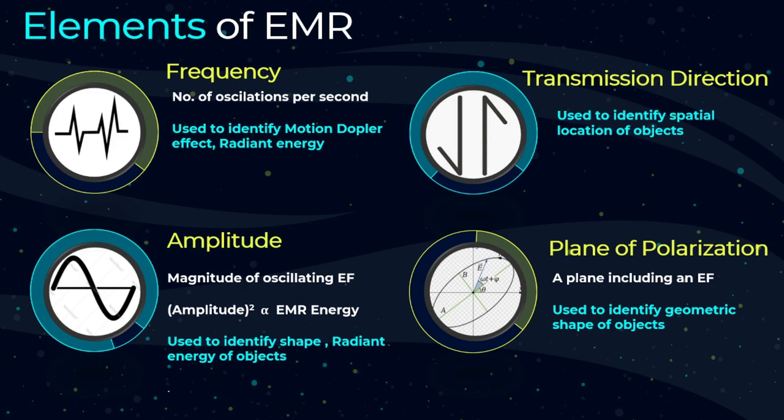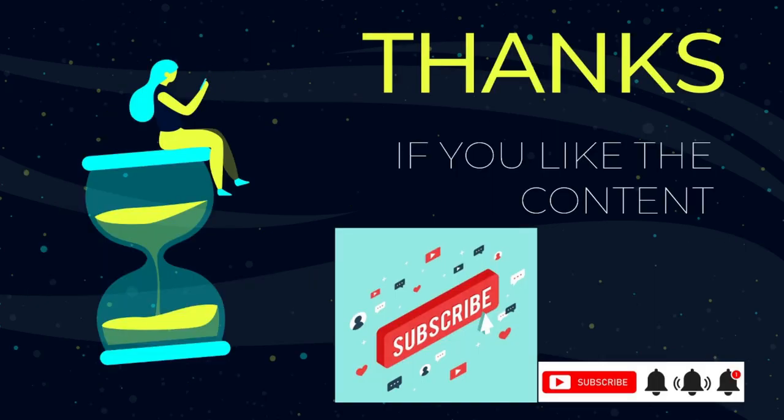So up to now we have discussed about what is remote sensing and the process of remote sensing, and in today's video the characteristics and the elements of electromagnetic radiation. In the next video we will discuss more fundamentals of remote sensing. Thank you for watching. If you like the content, please subscribe to the channel and click the bell icon so you can receive videos as soon as they are uploaded. See you soon in the next video.